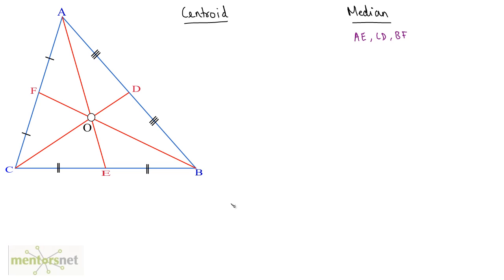What is a centroid? A triangle has three medians, and the point where all three medians intersect or meet is called the centroid. So O is the centroid of this triangle. A centroid has a property: it divides each median in the ratio 2 is to 1. That means segment BF is divided into 2 to 1 parts. Similarly, CD and AE are also each divided in the ratio 2 to 1.